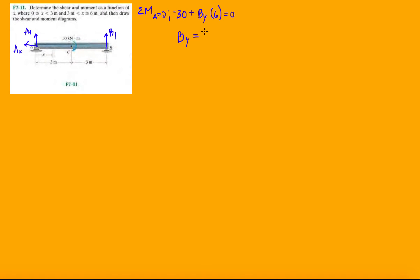Which is 30 over 6, which is 5 kilonewtons. And again, if we do forces in the y, we're going to have Ay plus By equals zero, and then we're going to end up getting minus 5 kilonewtons for Ay.